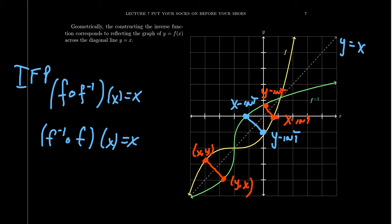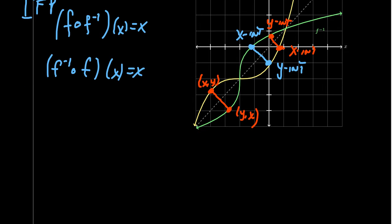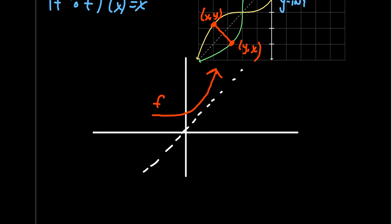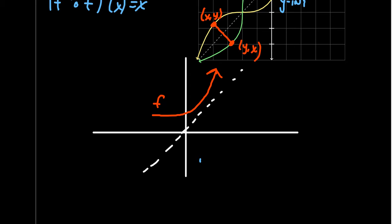We can see whether a function is an inverse of another because of this reflective property. If we have a graph of a one-to-one function f, we consider the diagonal line y equals x. The inverse function is the reflection of that graph across the diagonal. So f inverse would look like a mirror image. These should be exact mirror images of each other across the line y equals x.